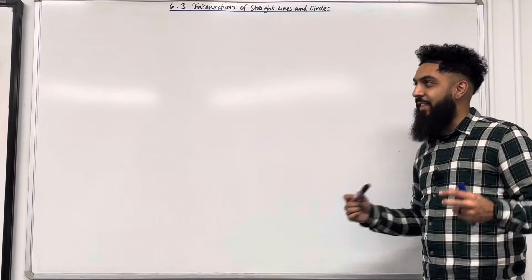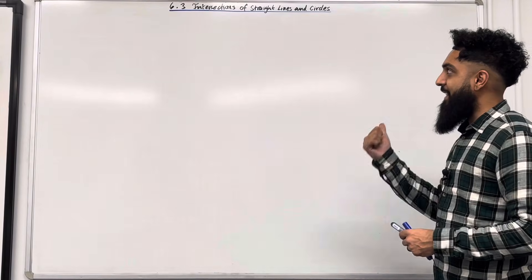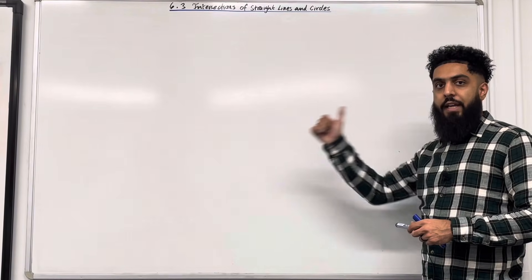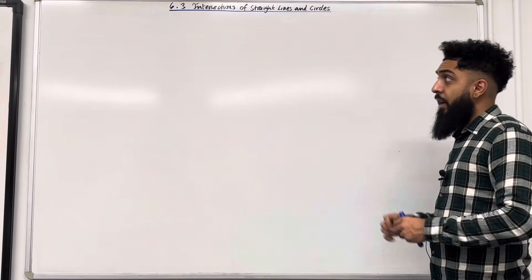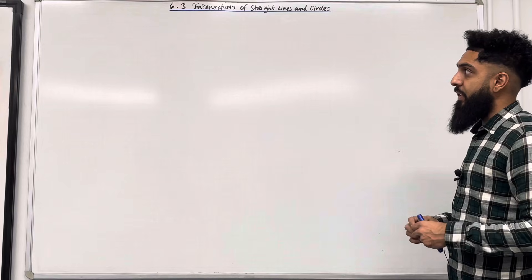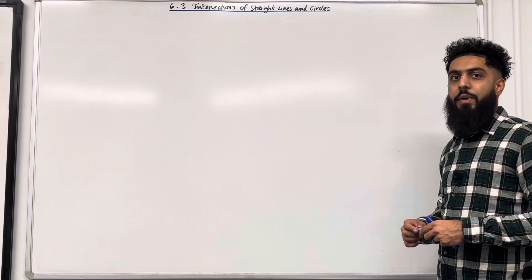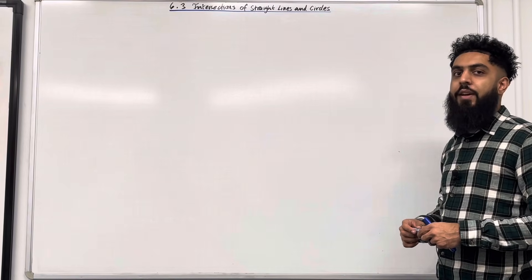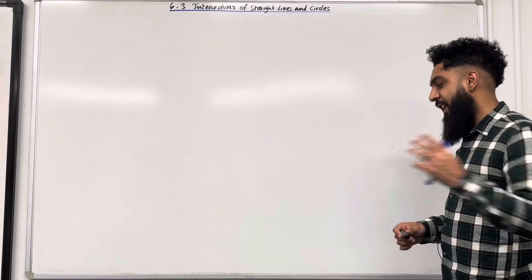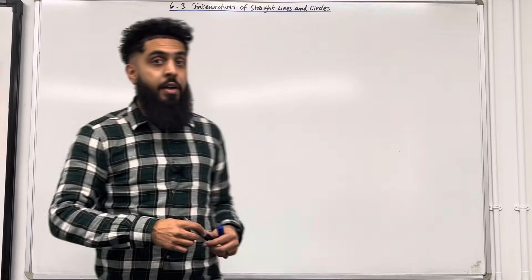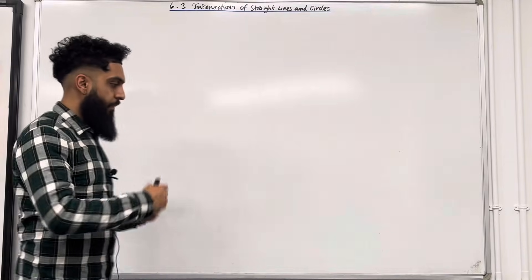Welcome back. In this teaching video, I'm looking at 6.3 intersections of straight lines and circles. 6.3 represents chapter 6, section 3 of the Pearson A-level Maths Pure Maths Year 1 textbook. Let's go through the key facts of this particular section.